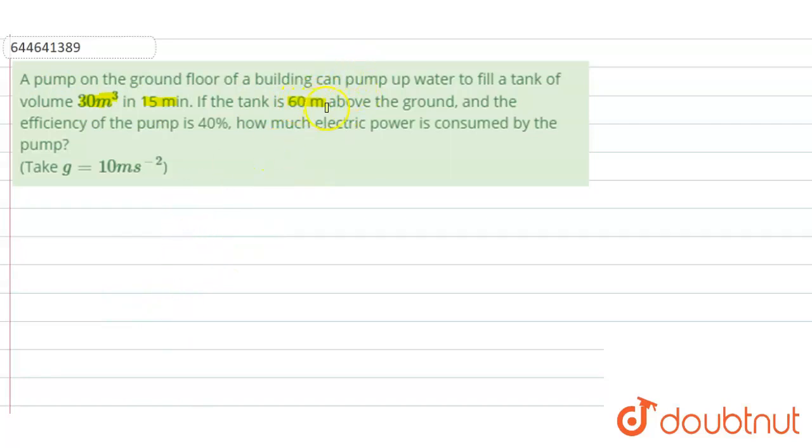Now the efficiency of the pump is 40 percent. What is the meaning of this? It simply means that out of the total power that is applied to the pump, only 40 percent of the power will be used to do the work. The rest will be wasted in the form of heat. Now how much electric power is consumed by this pump?